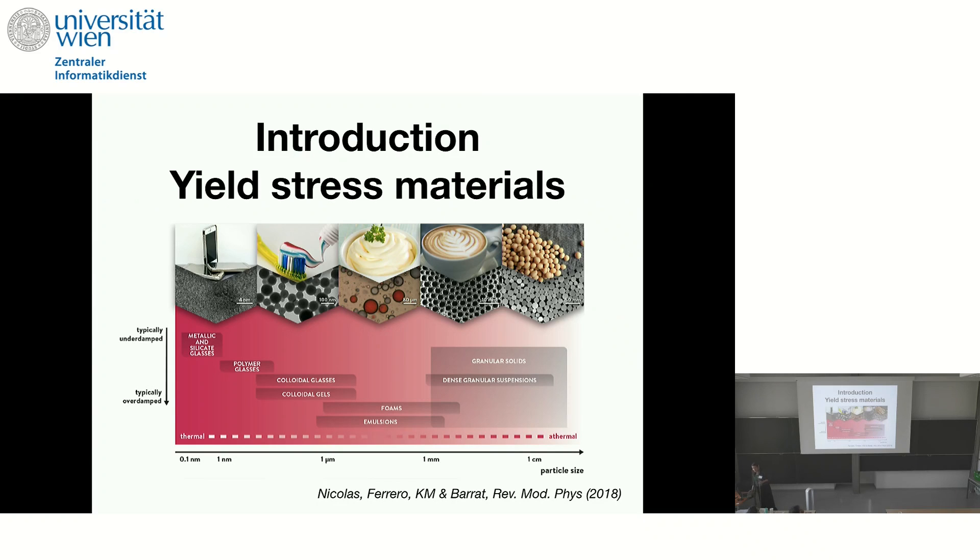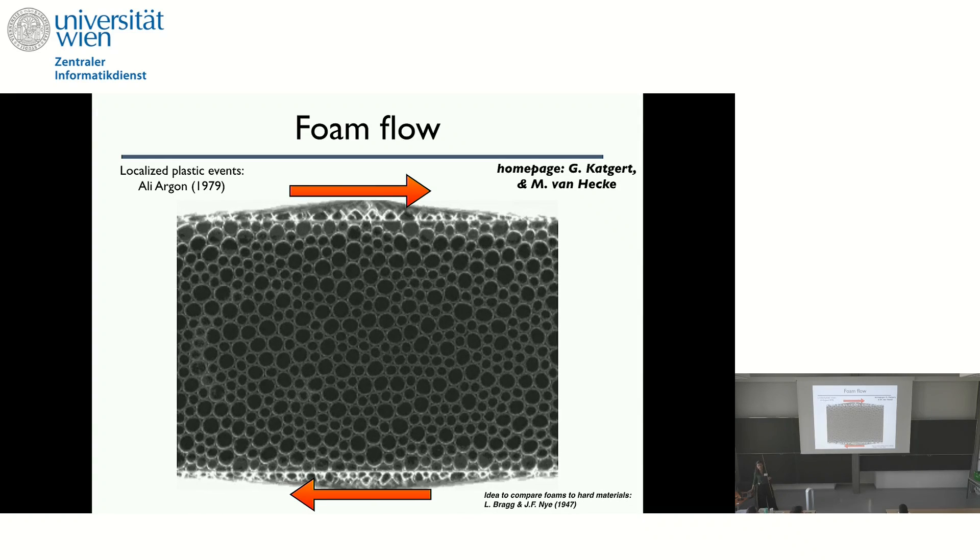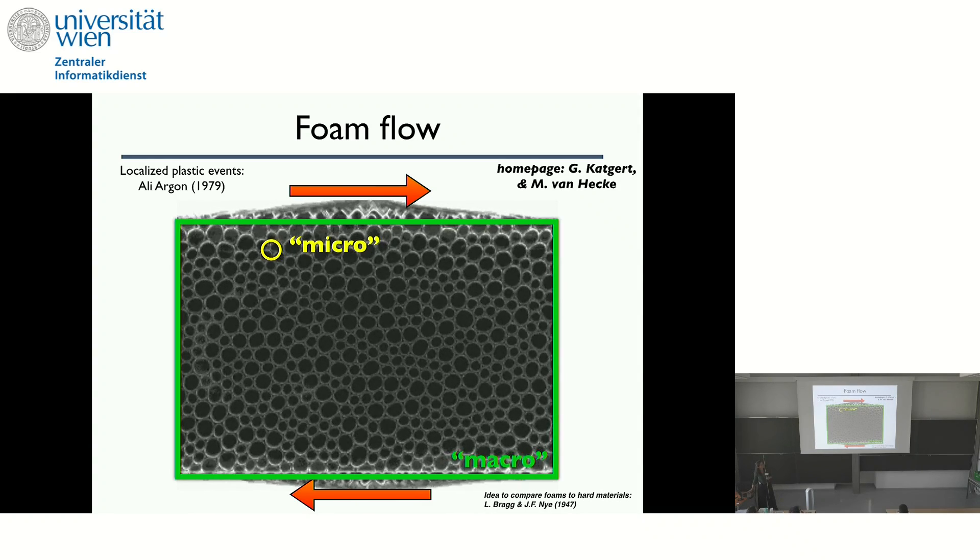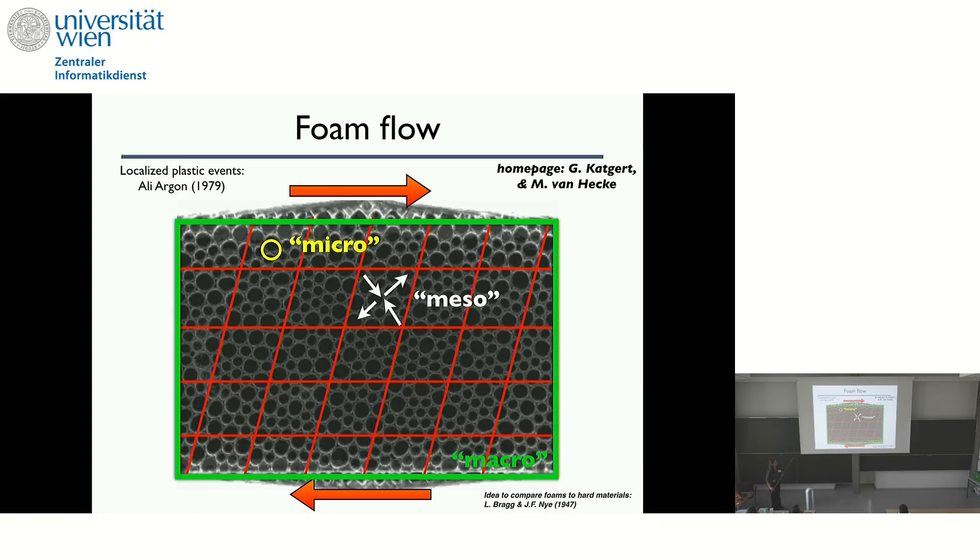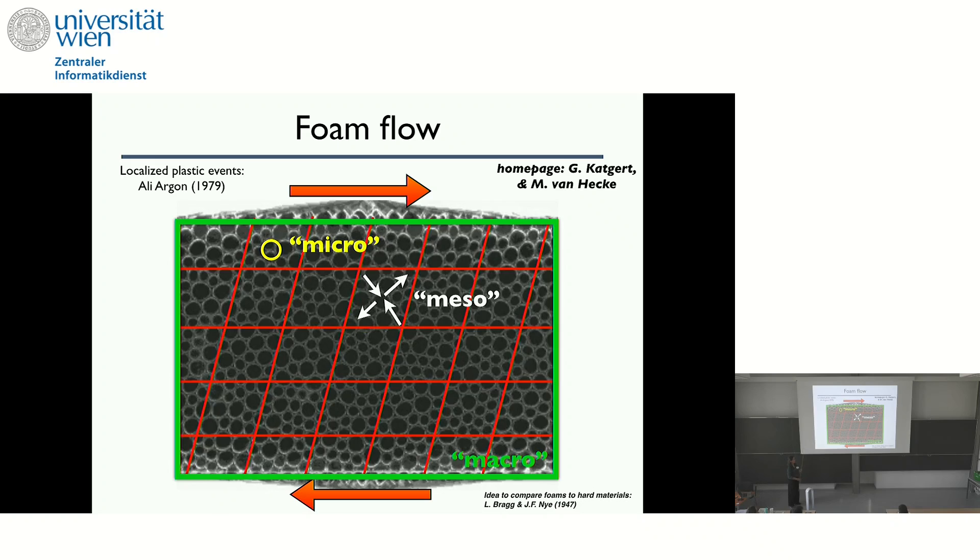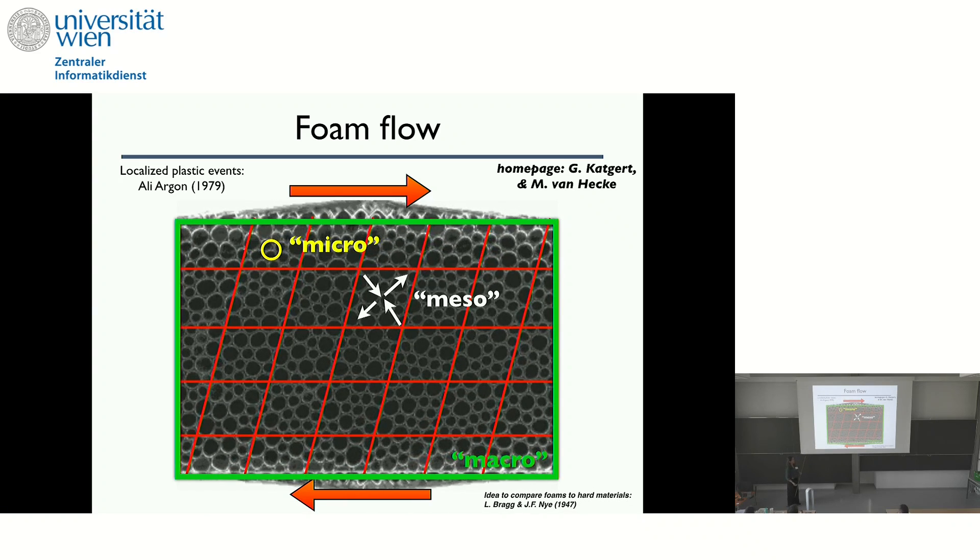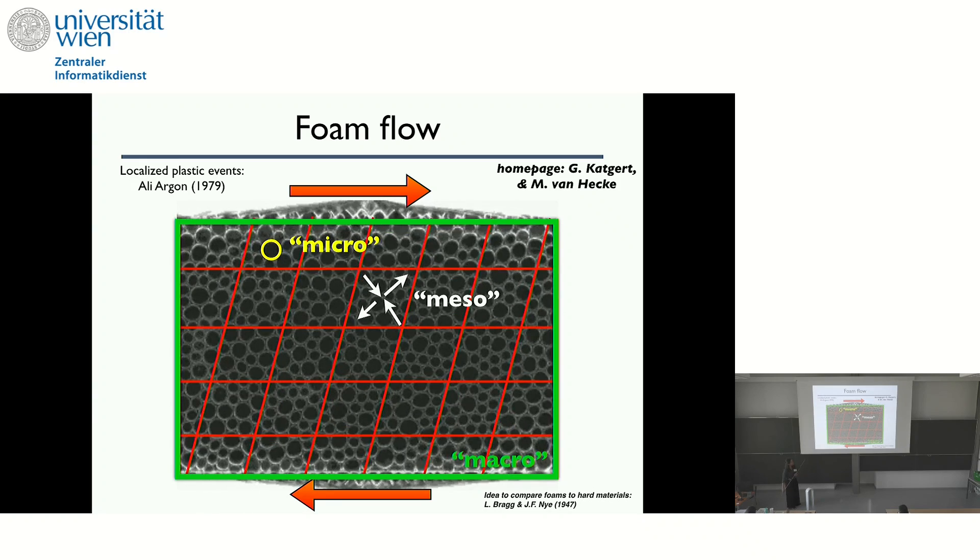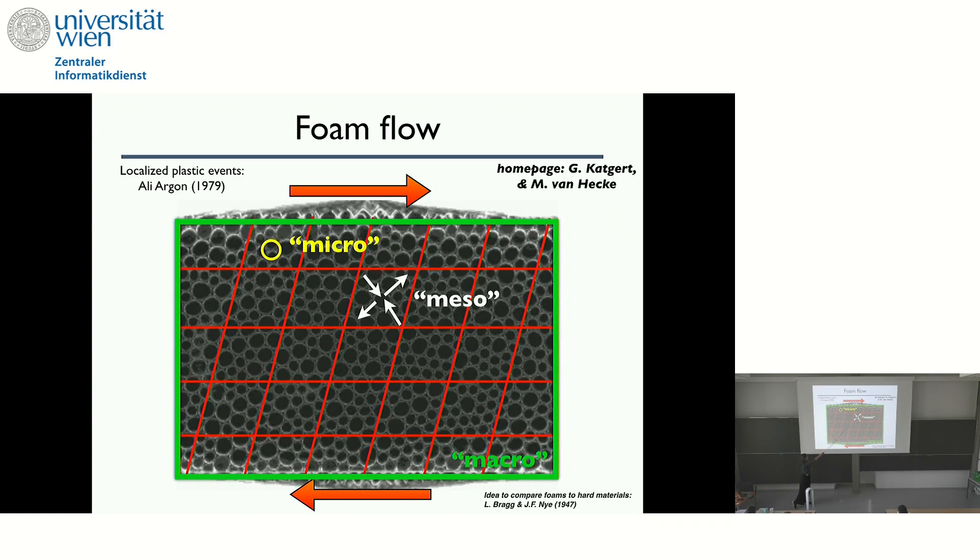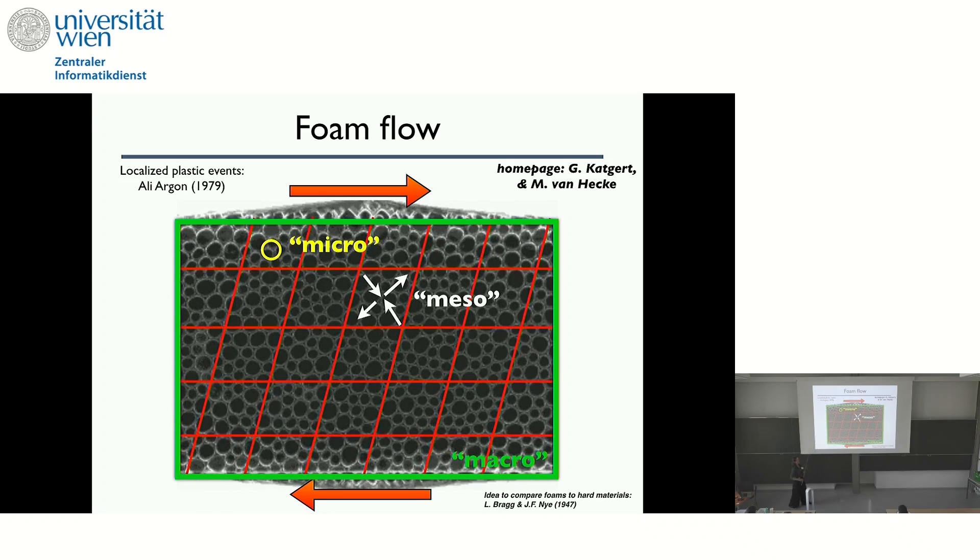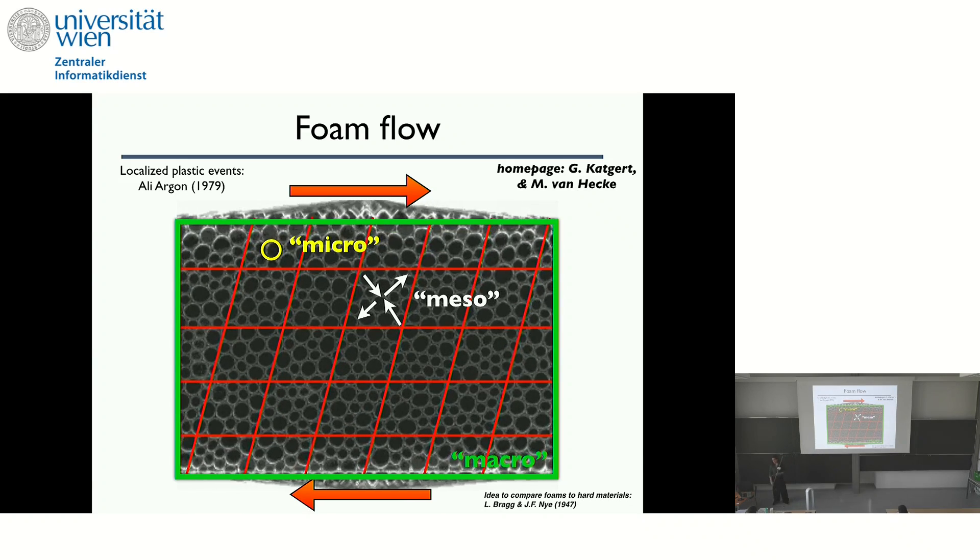Okay, let's start. So these are examples of yield stress materials, and what I will focus on are systems that are typically overdamped and that are rather athermal because the particle size is large. And the way we model this is by elastoplastic models, and this was already alluded to, so the way we do this is we introduce a mesoscale. This is a scale of some tens of particles where you can define proper stress and strain variables. And also it's the scale on which you have these local rearrangements happening that lead to stress redistribution that was already explained.